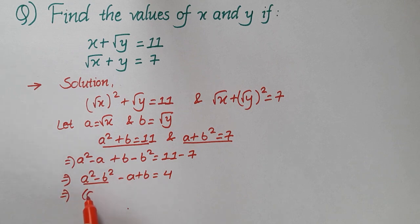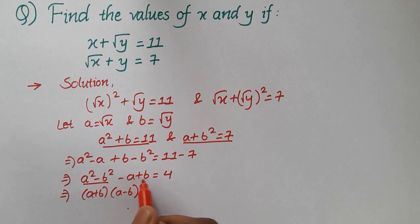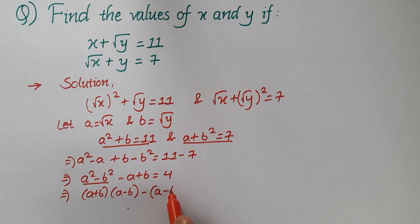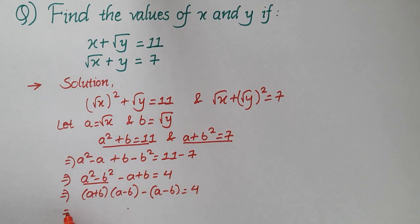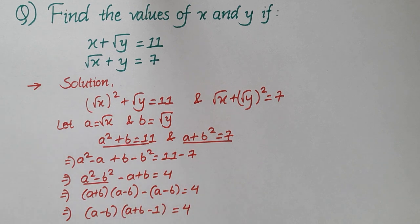Now a squared minus b squared can be written as a plus b multiplied by a minus b. Taking minus common from the remaining two terms, we will have minus a minus b, giving us a plus b multiplied by a minus b, minus a minus b multiplied by a plus b minus 1, equal to 4.